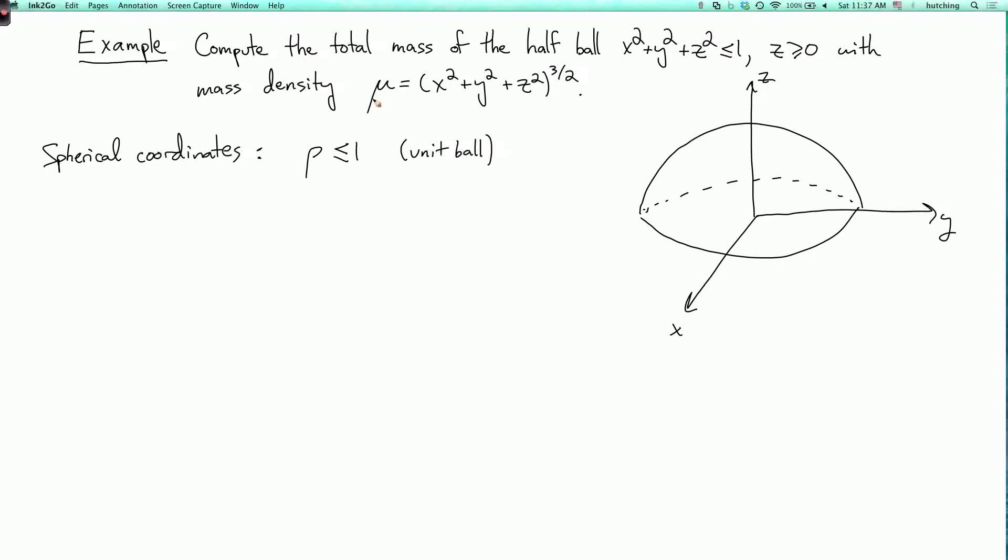And then what does it mean to be in the upper half? Well, remember the coordinate phi. So when we're on the positive z-axis, phi is equal to 0. When we're on the negative z-axis, phi is equal to pi.